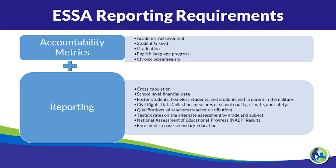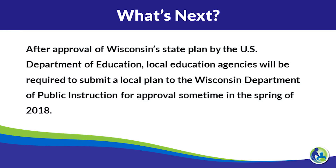We have sent our state plan in to be approved by the U.S. Department of Education. Once we get notification that that plan is approved, we will be asking local school districts to submit a local plan for approval sometime in the spring of 2018. Local districts will be asked to provide assurances that they're going to be meeting the requirements in the law, as well as answering specific questions required in the law.